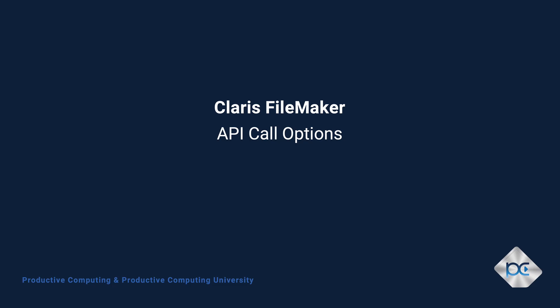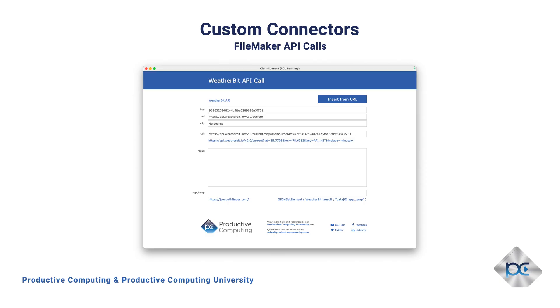Now we're going to switch over to Claris FileMaker and have a look at a quick comparison between the API call via the Insert from URL script step and from our newly built custom connector. We're going to start with calling the API within Claris FileMaker via the Insert from URL script step. With our call data complete with the three parts — key, URL, and city — we can return the result from the API in one script step.